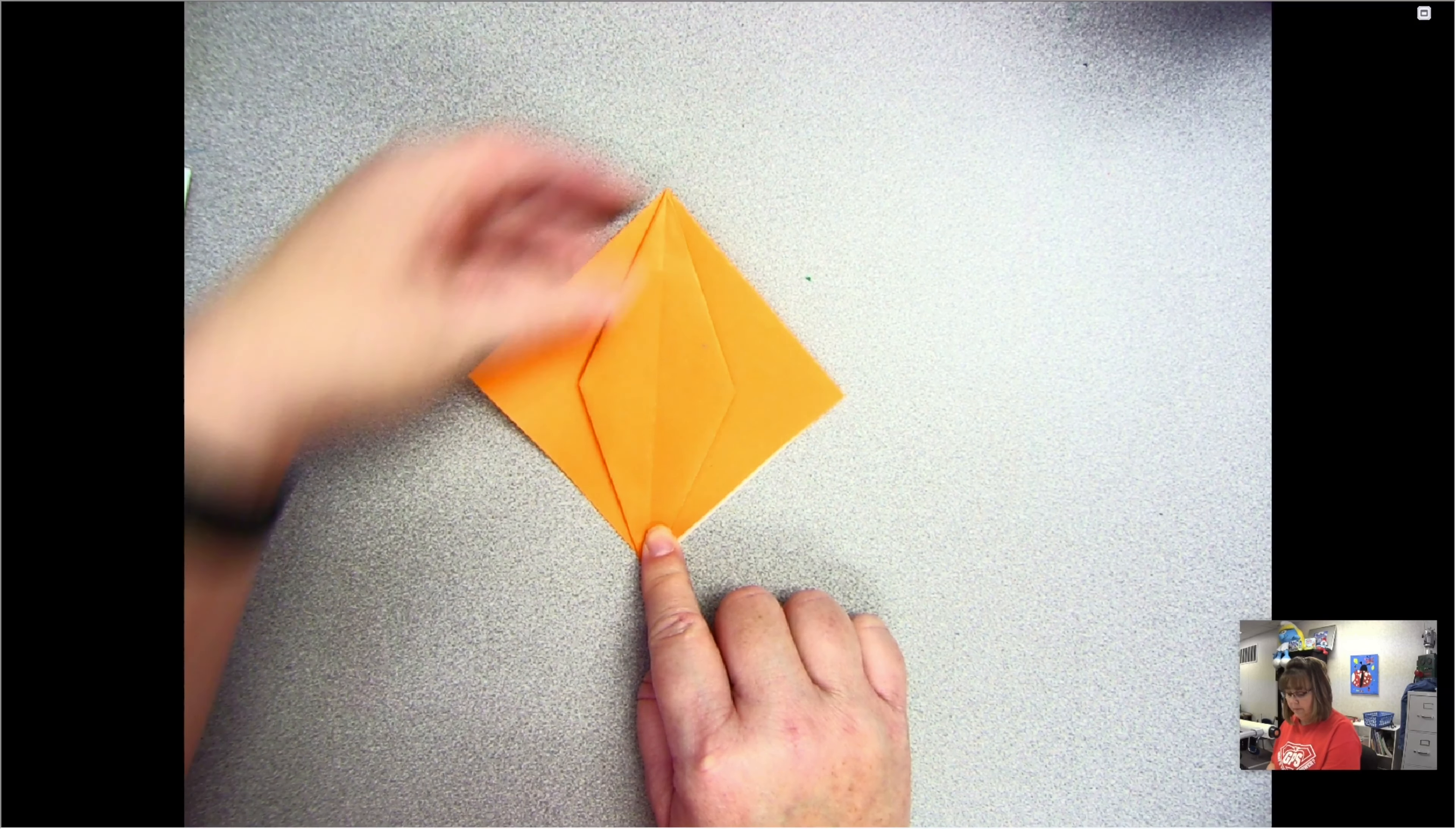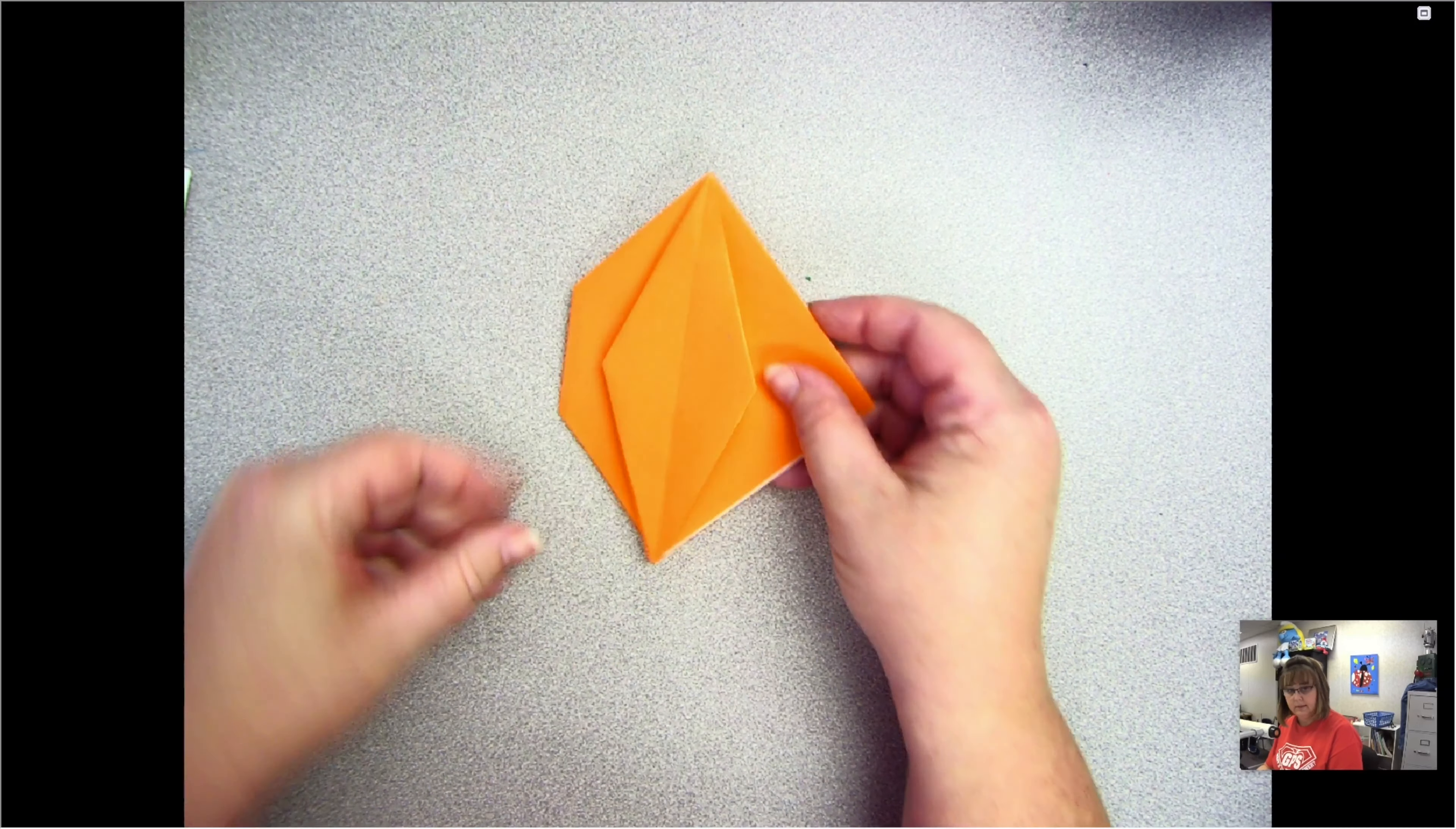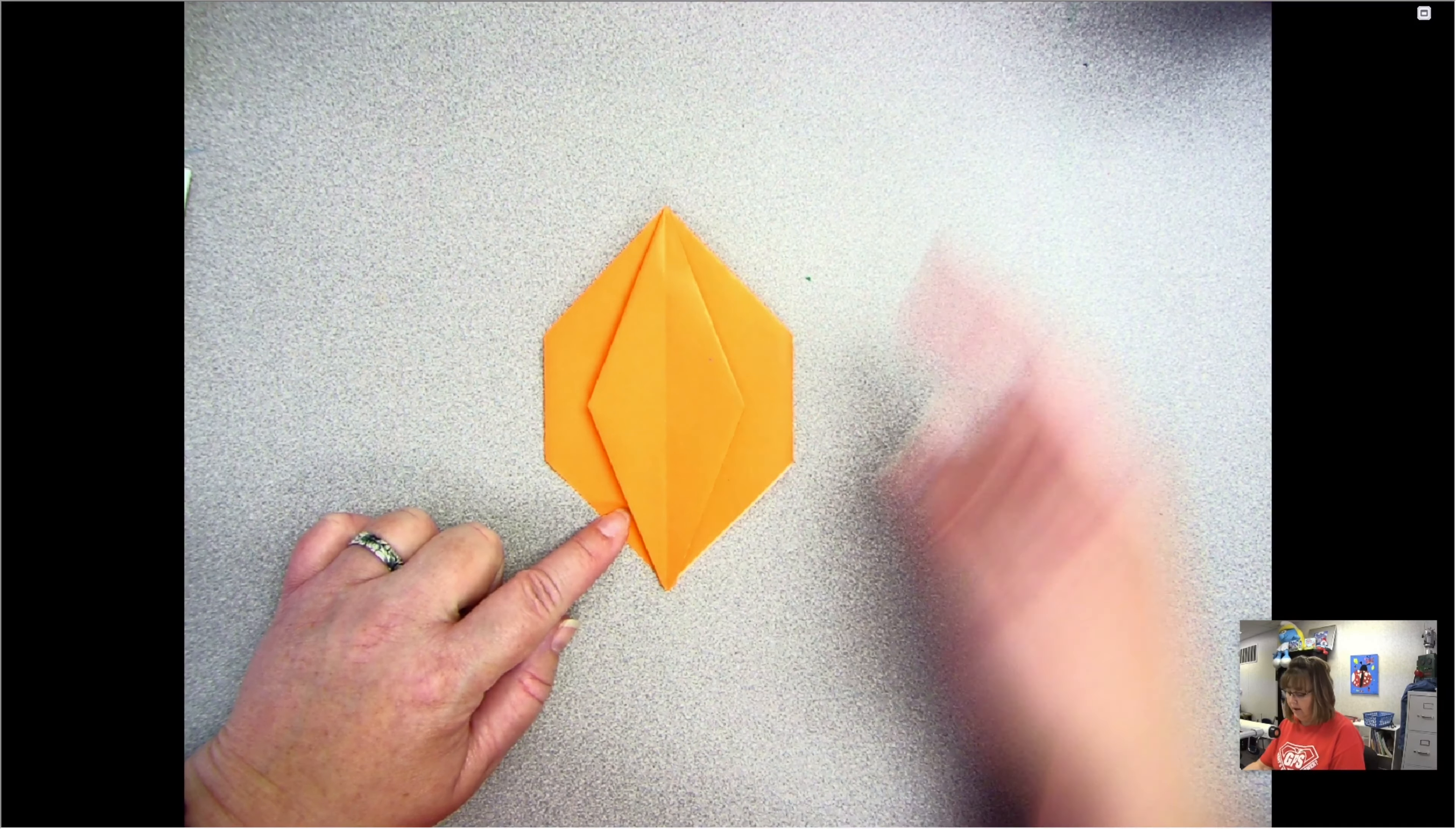And now I'm going to do the sides. First, this corner and this corner, we're going to fold them back. So I'm going to fold it back here, I'm going to try to do the same thing on this side, try to make them the same or similar.